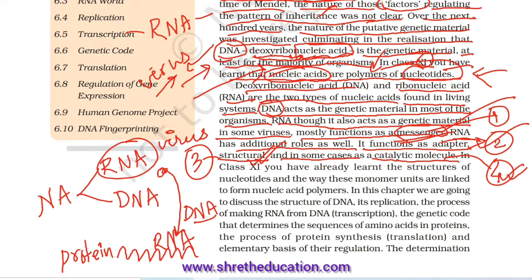In class 11, you have already learnt the structures of nucleotides and the way these monomer units are linked to form nucleic acid polymers.